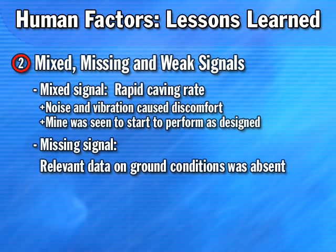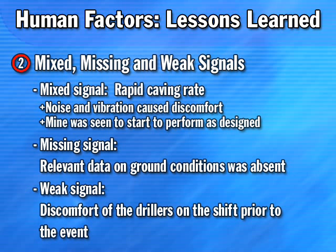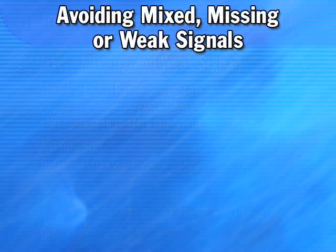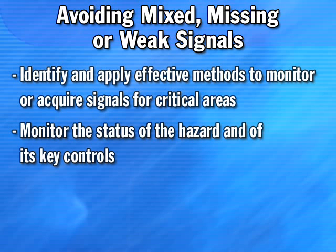Missing signals, such as the absence of relevant data on ground conditions, as well as weak signals, such as the further discomfort of the drillers on the shift previous to the event, also fit into an event profile where recognised human factors issues may have contributed. Methods of avoiding mixed, missing, and weak signals usually involve the identification and application of effective methods to monitor or get signals for critical information about the status of hazards. If a major hazard is present, careful consideration should be given to methods of monitoring the status of the hazard and the key controls on that hazard. If the monitoring is effective, the resultant information should not provide mixed or weak signals.